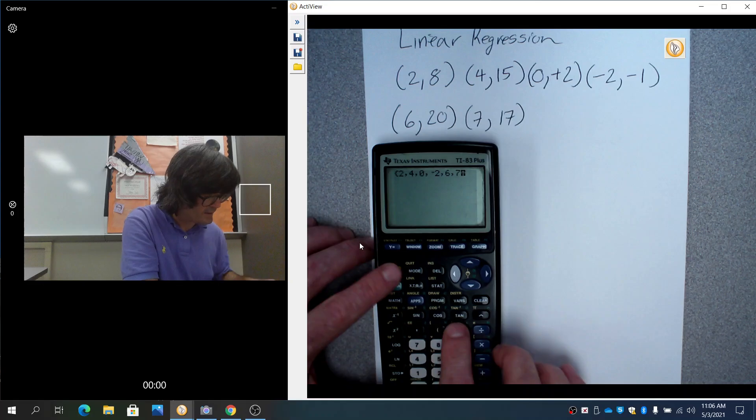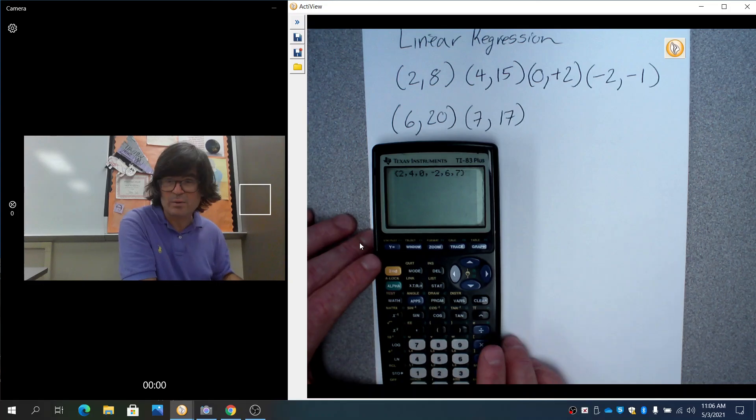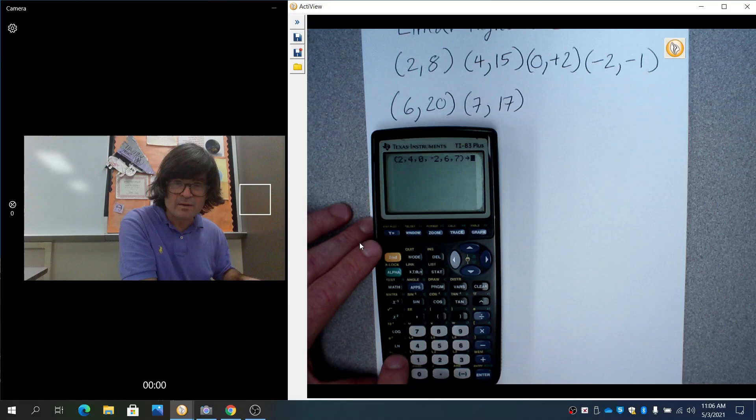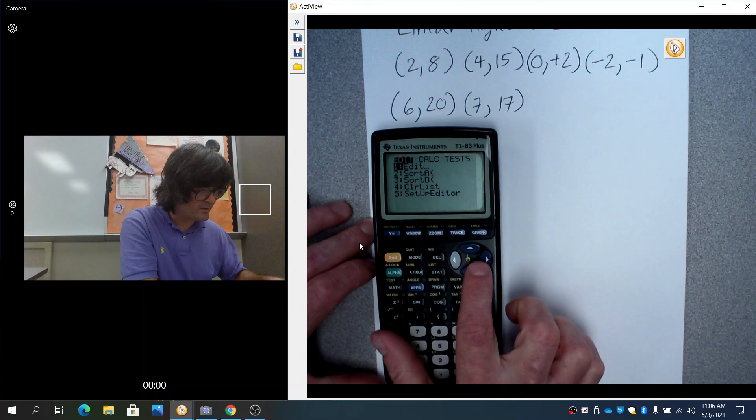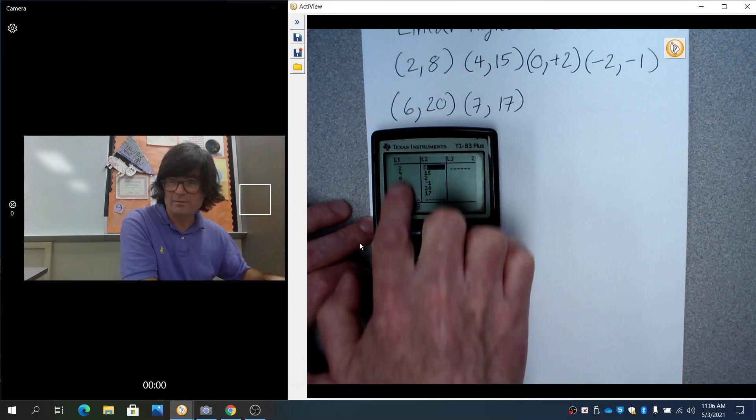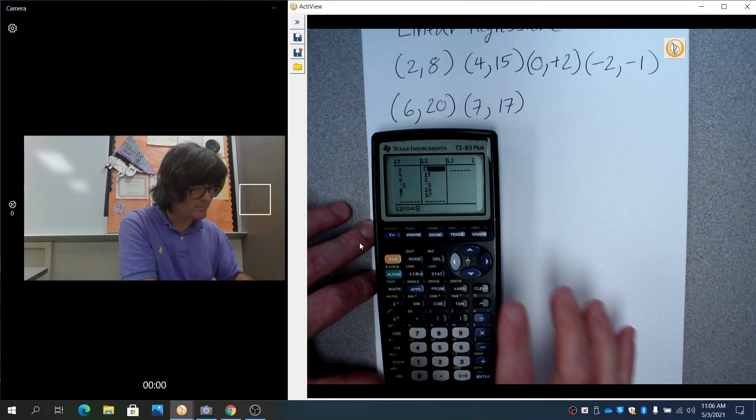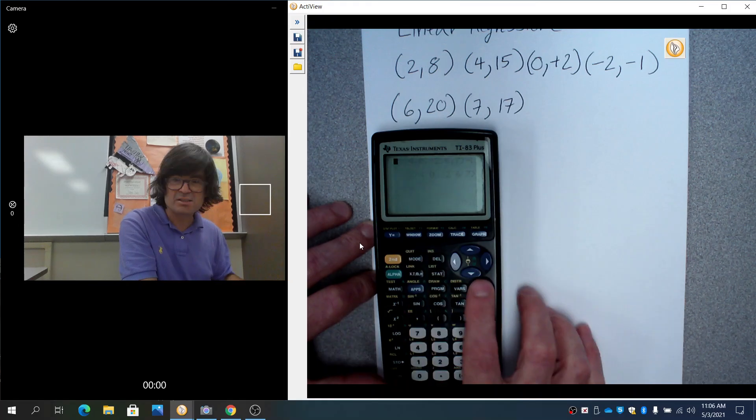By the way, another way you can enter data in a list is if you go to these fancy curly brackets - second bracket - you can do 2 comma 4 comma 0 comma negative 2 comma 6 comma 7, this is optional. Then end it like that. So put your data in curly braces with commas, and if you push this STORE key right here and then list one is L1 above the one, hit ENTER and it makes it list one. If you went to STAT EDIT you can see that's list one. So that's optional, but I prefer to just type them right in.